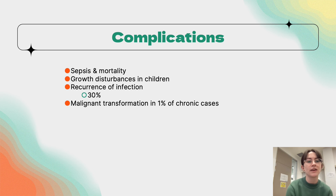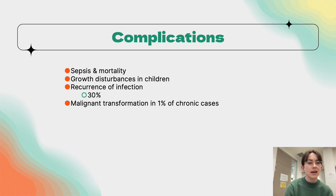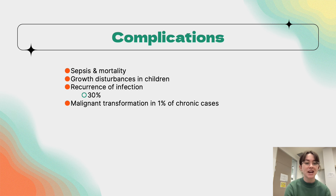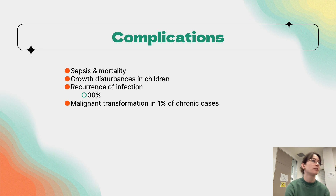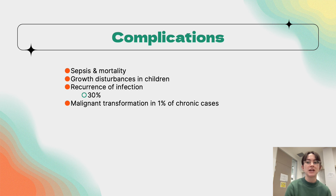Complications include sepsis and, in children, disturbance of bone growth. Despite surgical debridement and long-term antibiotics, the recurrence rate of chronic osteomyelitis is 30% in adults — quite significant. Malignant transformation can occur in 1% of chronic cases. There is also poor prognosis in patients with major nutritional or systemic disorders.